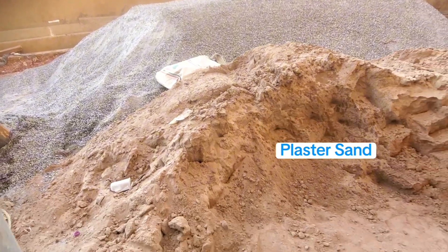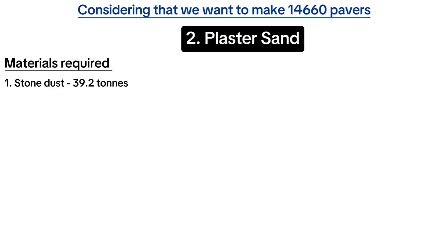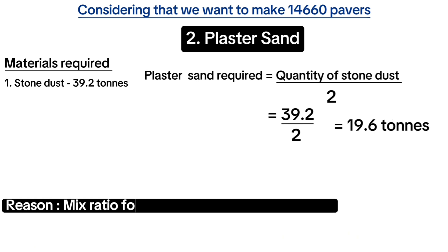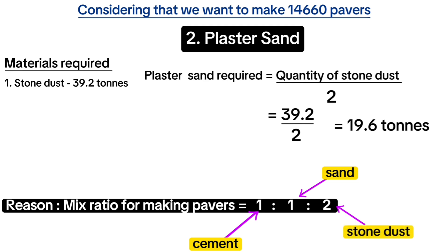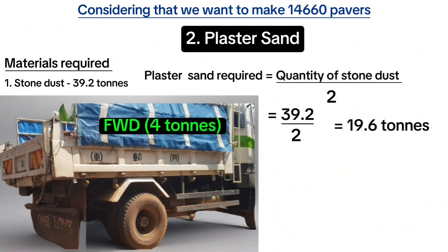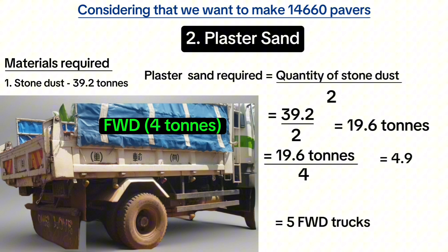The second material we need is plaster sand. Plaster sand helps to bind together the aggregates in the stone dust, making it essential. Getting the quantity is simple: plaster sand equals stone dust divided by two, that is 39.2 tons divided by two to get 19.6 tons. This is because when making pavers we use a mix ratio of 1:1:2 — one part cement, one part sand, and two parts stone dust. Therefore, 19.6 divided by four gives 4.9, equivalent to five forward trucks of plaster sand.